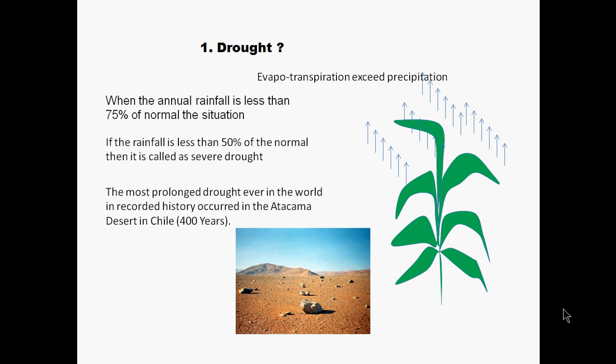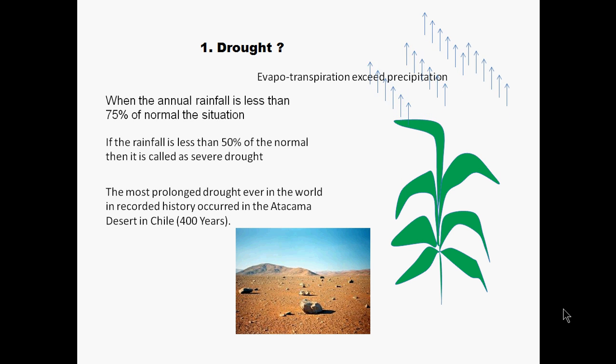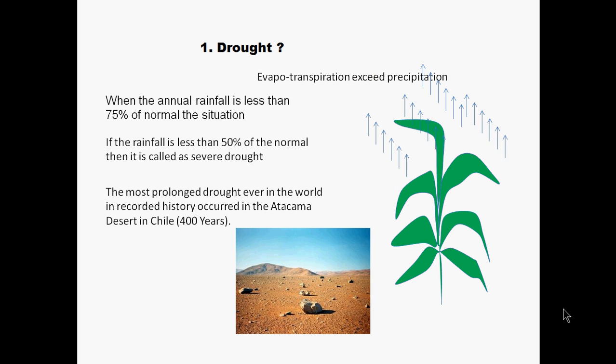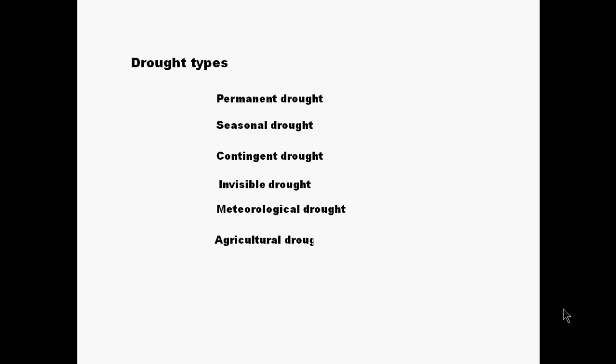In the history of humankind, the most prolonged and deadliest drought occurred in the Atacama Desert, situated in Chile, about 400 years ago. Drought itself is classified into different types based on different criteria: permanent drought, seasonal drought, contingent drought, invisible drought, meteorological drought, agricultural drought, hydrological drought, and atmospheric drought.